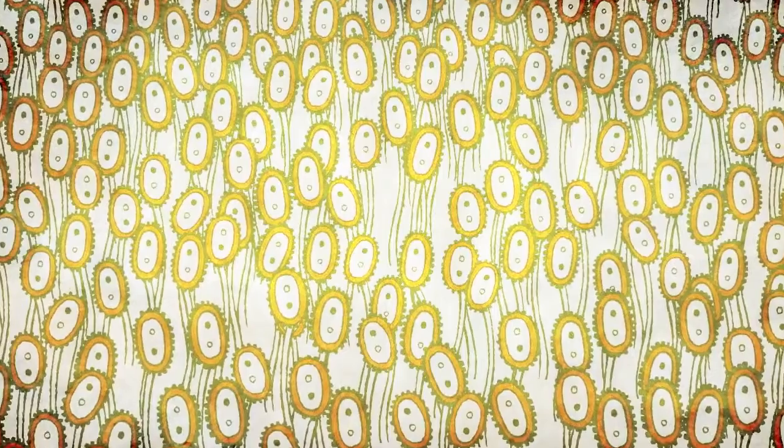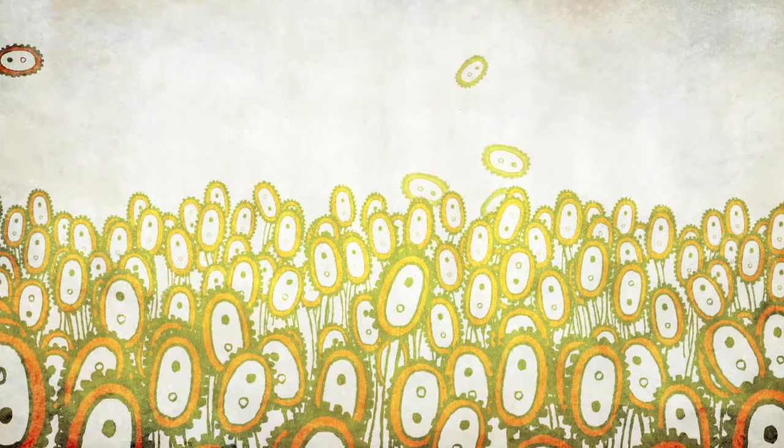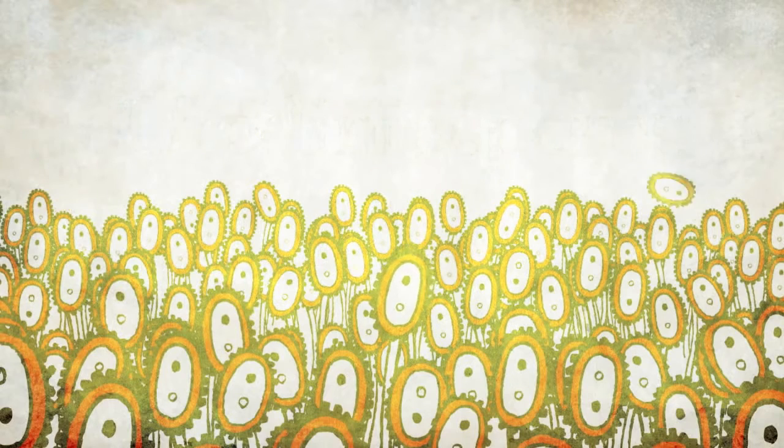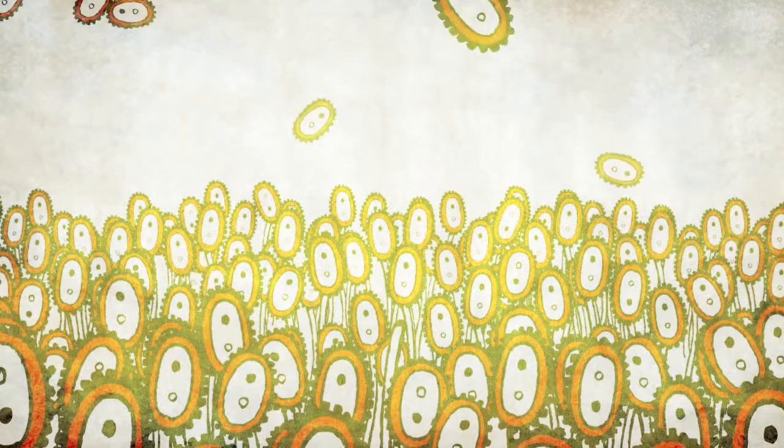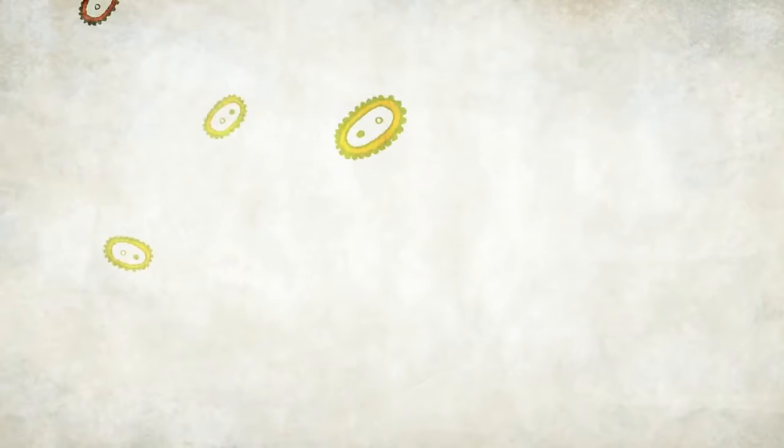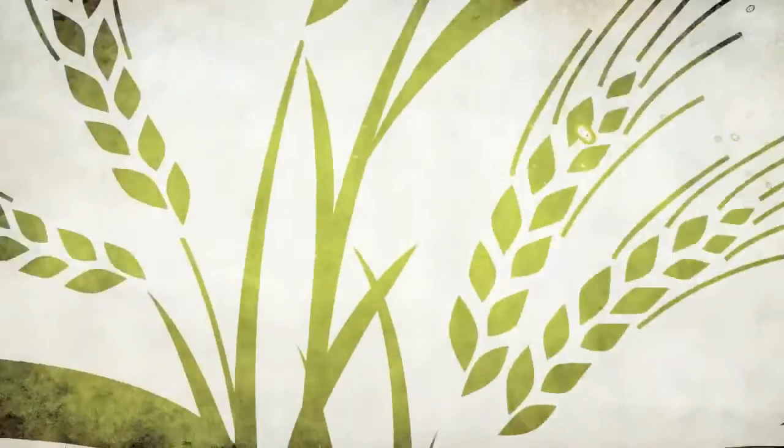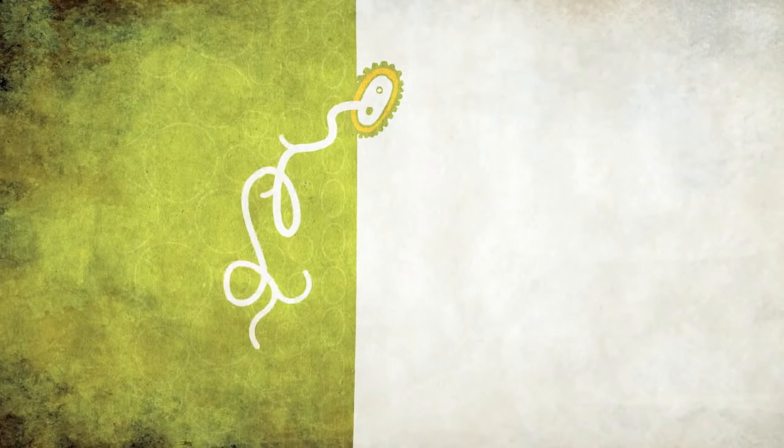A single pustule can produce tens of thousands of these spores, called uridinia spores, with each one capable of infecting a wheat plant and producing yet another pustule. Carried by the wind, perhaps to a neighboring plant, perhaps to another wheat field hundreds or even thousands of miles away, a microscopic uridinia spore can land, germinate, and cause new infection.